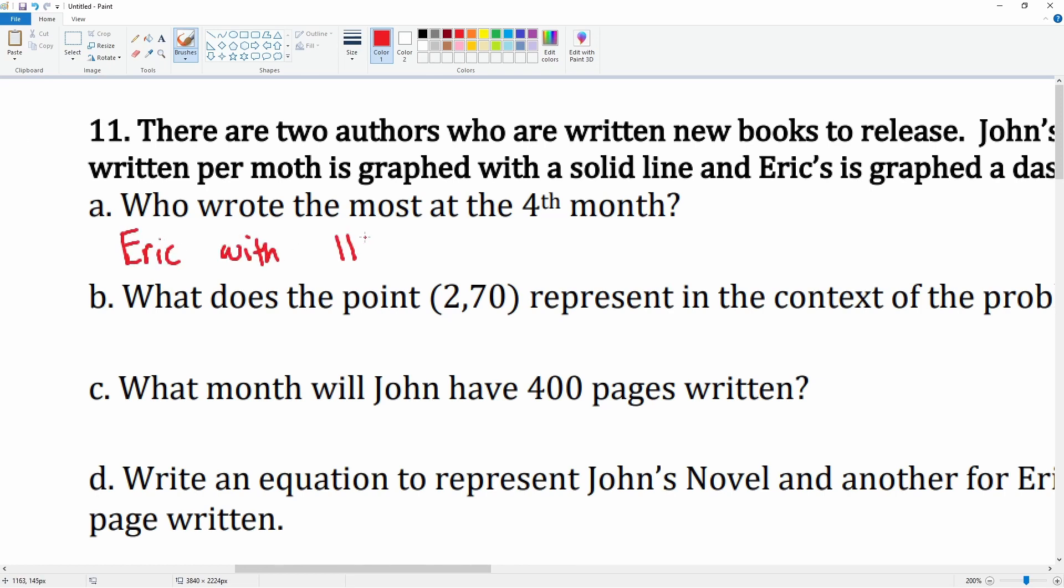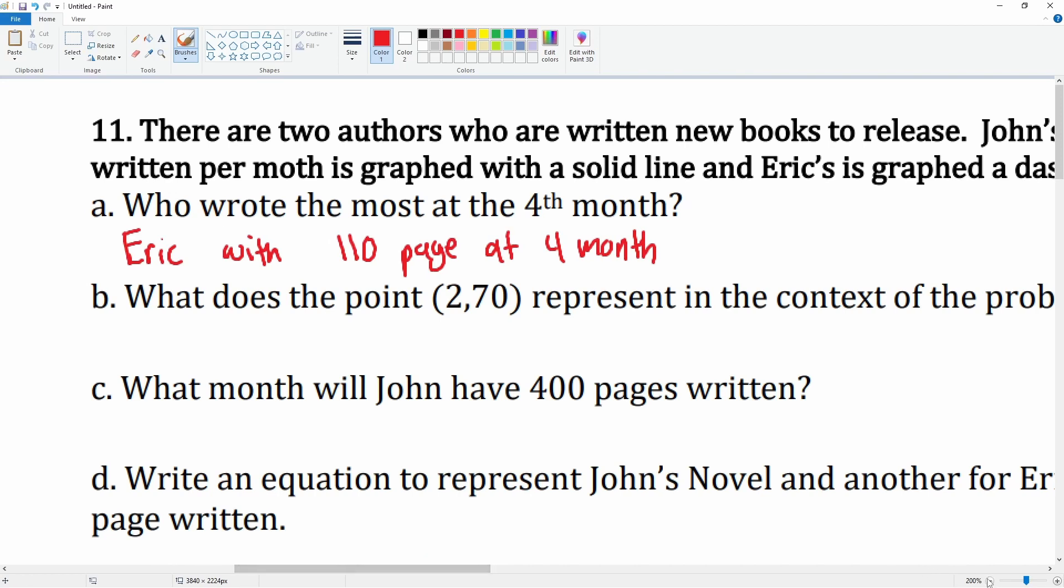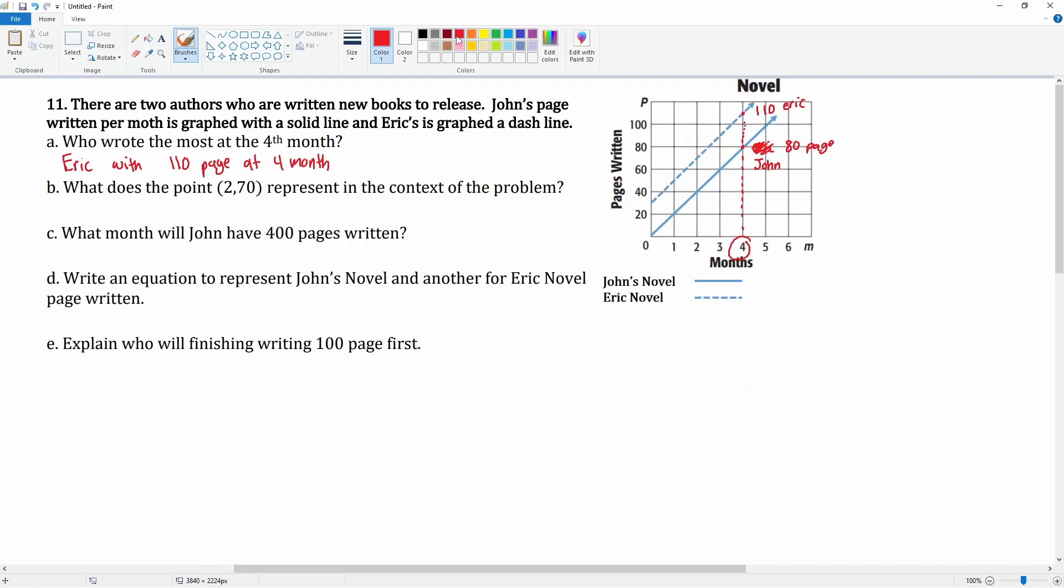All right, so what does the point (2, 70) represent? So (2, 70) looks like it's right here. Okay, so this is referring to the dashed line, so this is Eric's. This is referring to Eric, right? And we can just take a look at the units. The x-axis is